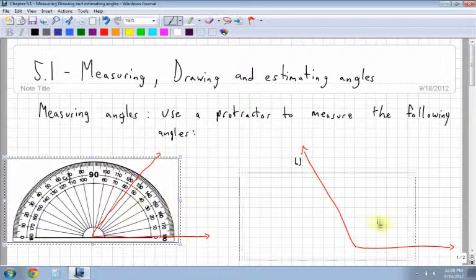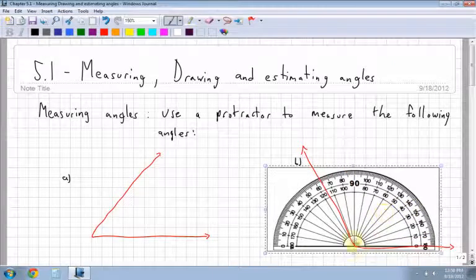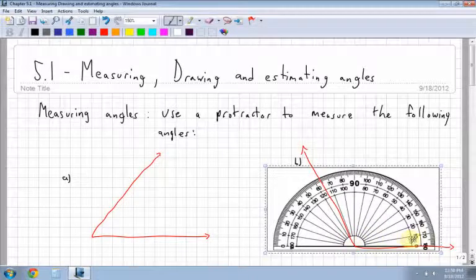If I take the same protractor and move it over to my other angle over here, again do the same thing, make sure that the middle line lines up at the vertex and that the bottom straight line is along a straight line of your angle.